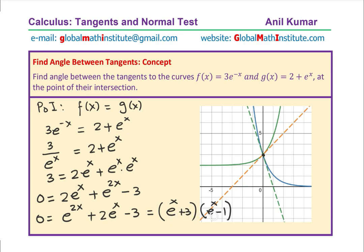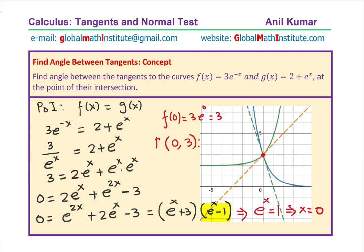The valid solution e^x = 1 gives x = 0. Therefore, substituting x = 0 into f(x): f(0) = 3e^0 = 3. The coordinate point of intersection is (0, 3). We will call this point P. We have now completed the first part — finding the point of intersection, which we also visualized earlier.